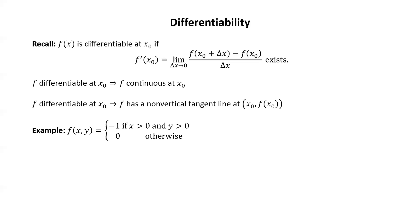Consider this function f of xy equals negative 1 if x and y are both positive, and 0 otherwise. This function has a discontinuity at the point (0, 0), because at (0, 0) the function is defined to be 0, but near (0, 0) where x and y are both positive, the function is always negative 1.